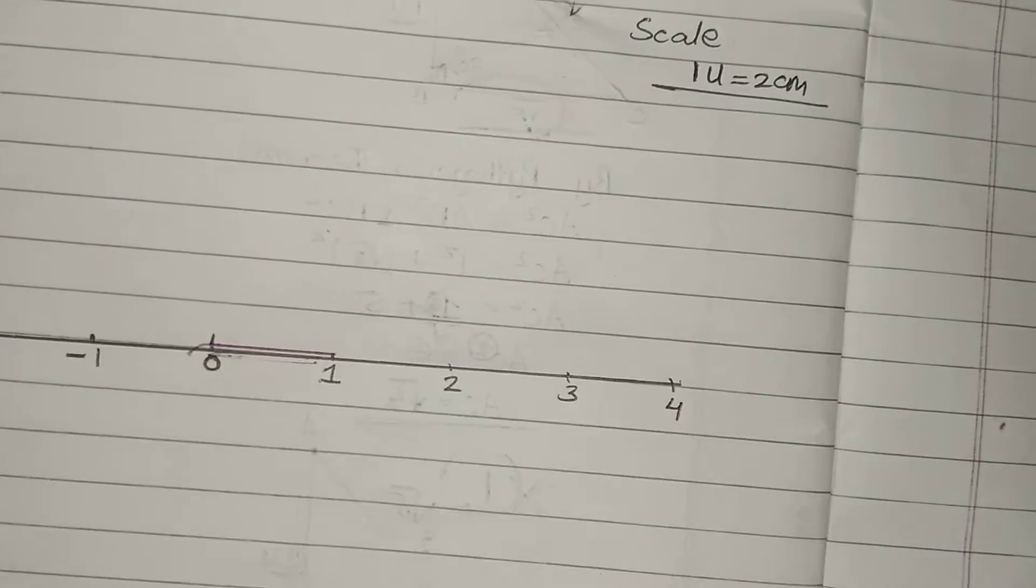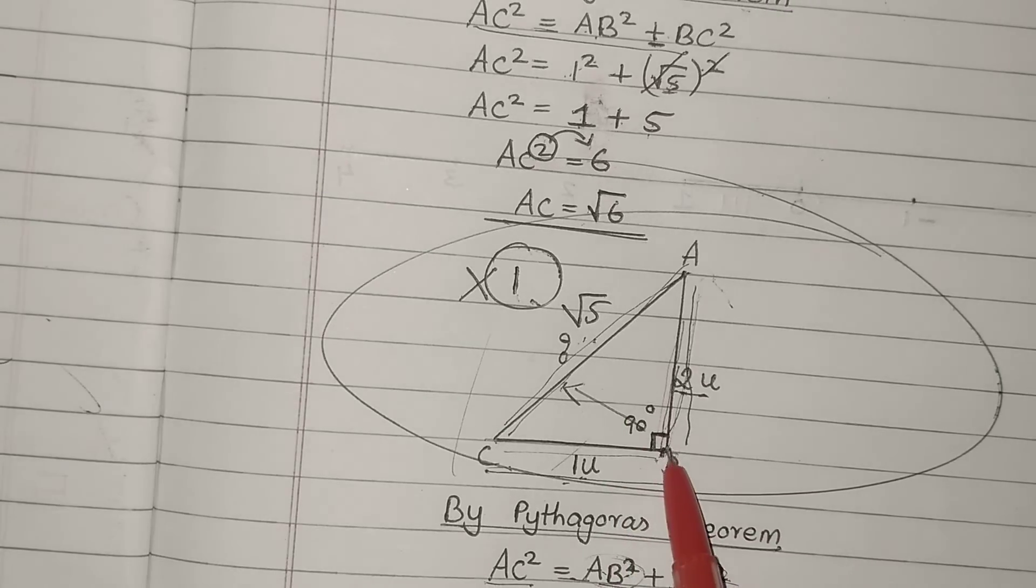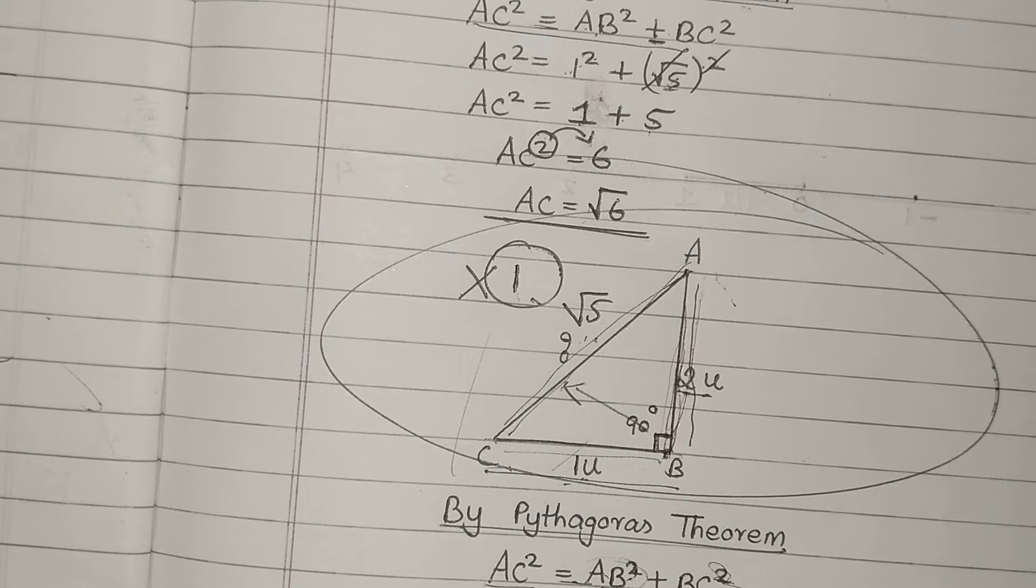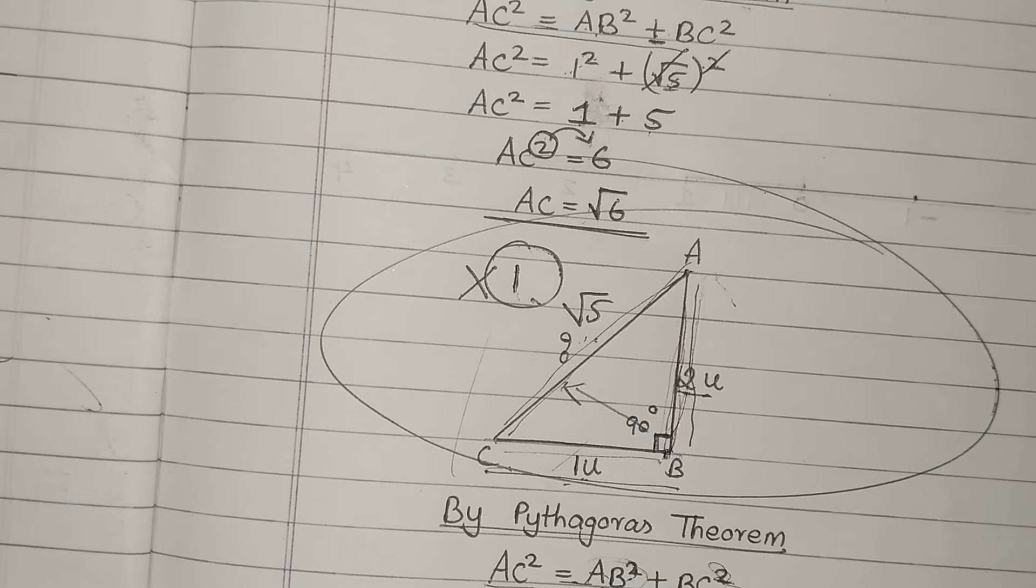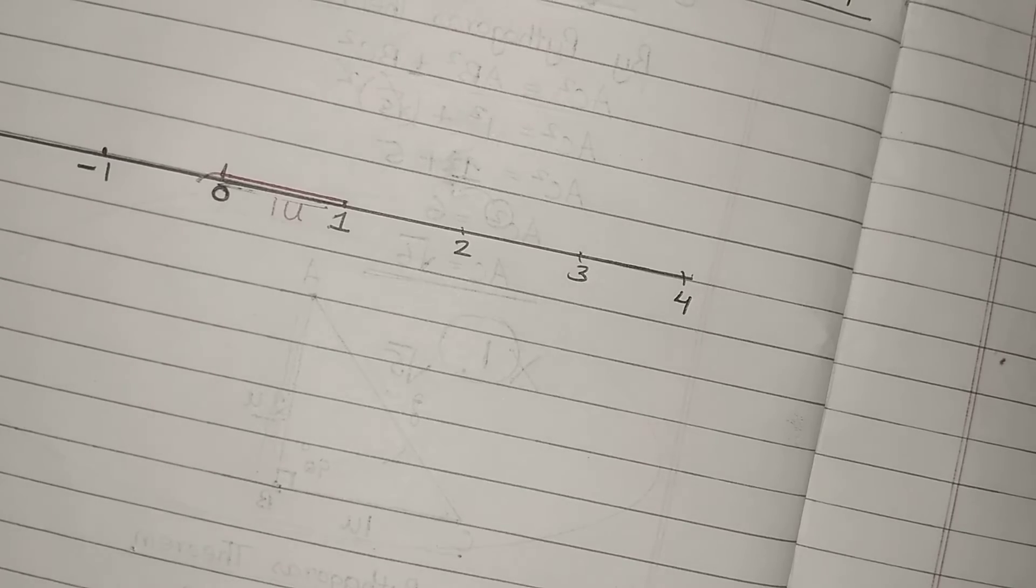After drawing 1 unit like this, we need to construct a perpendicular line. You can make use of protractor or you can use compass also depending upon your teacher's marks. I will make use of compass. For that, let me take the compass.